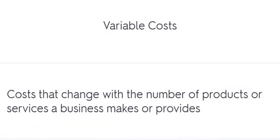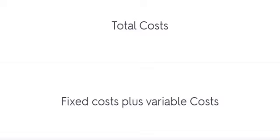Variable Costs: costs that change with the number of products or services a business makes or provides. Total Costs: Fixed Costs plus Variable Costs.